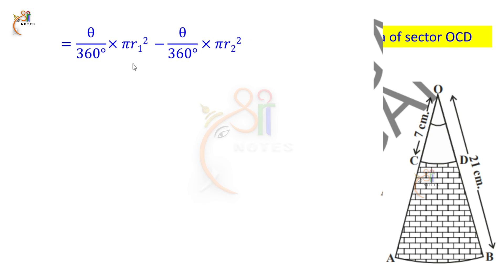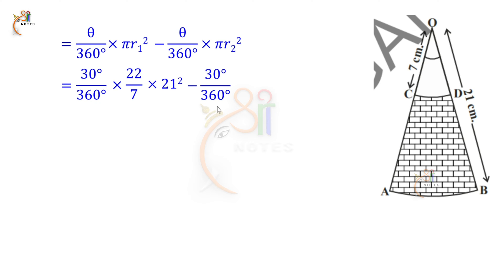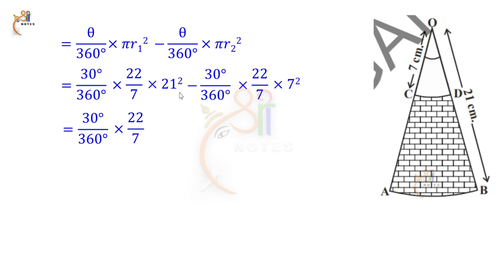Now replace values. Theta is 30 degrees, so write 30 by 360. Pi value is 22 by 7, and R1 is 21, so write 21 square = 441. Minus: 30 by 360 into 22 by 7 into 7 square = 49.